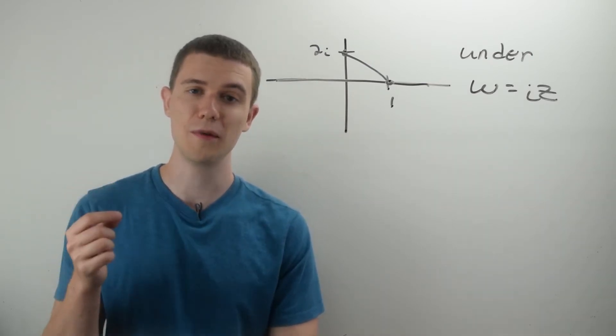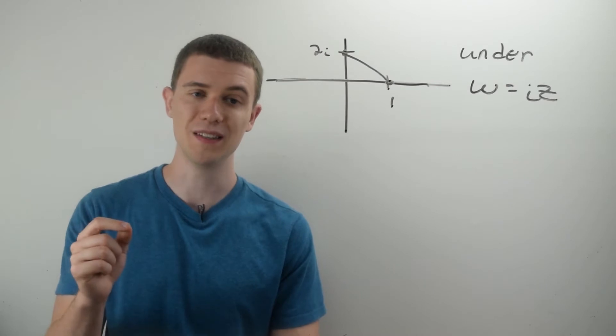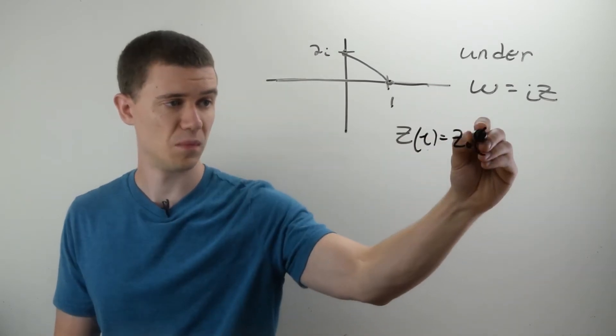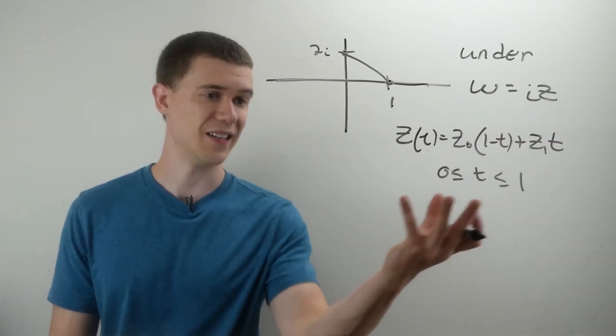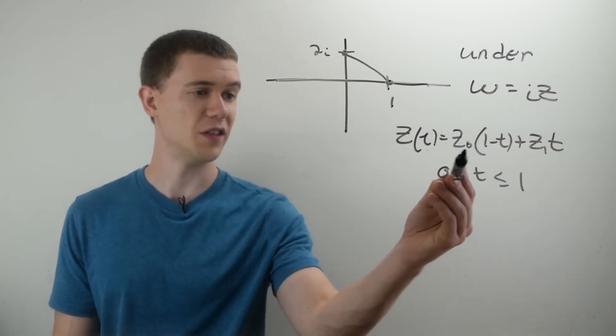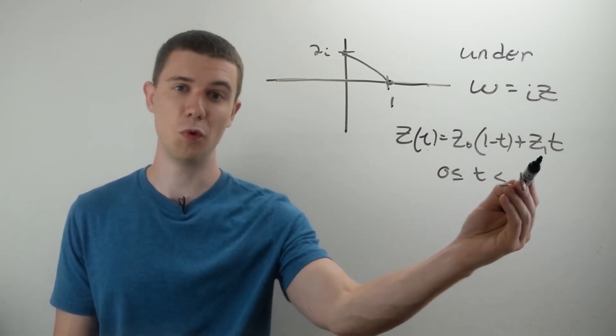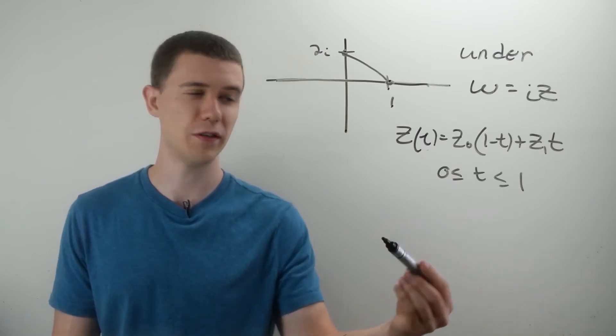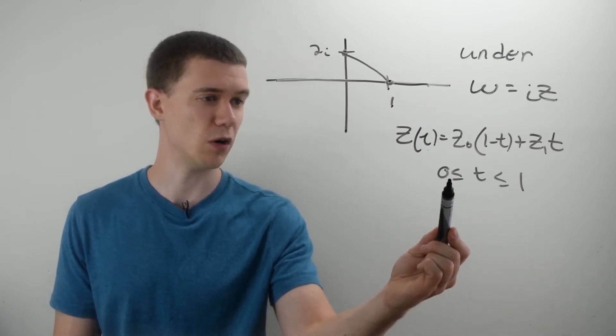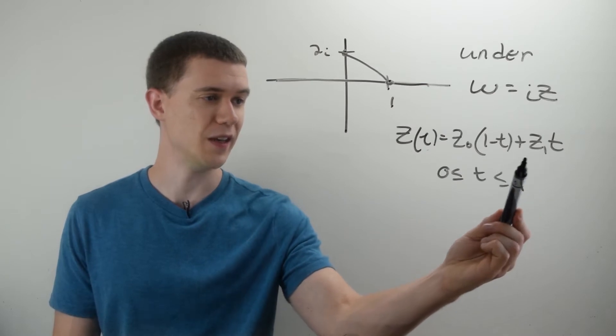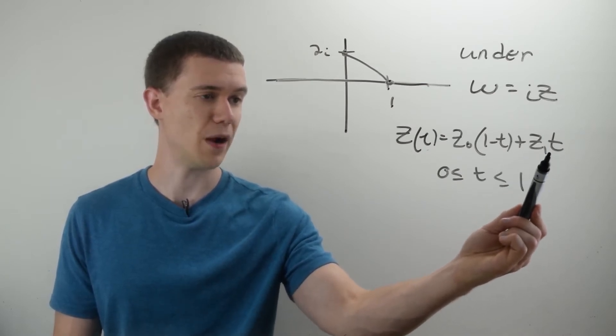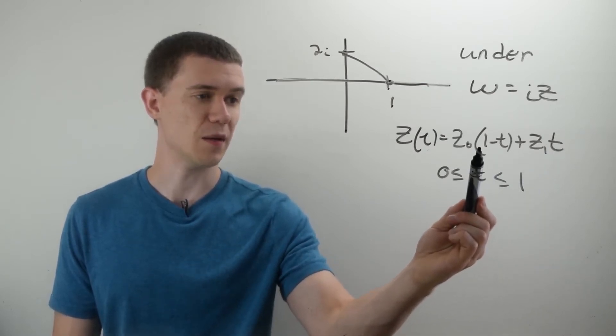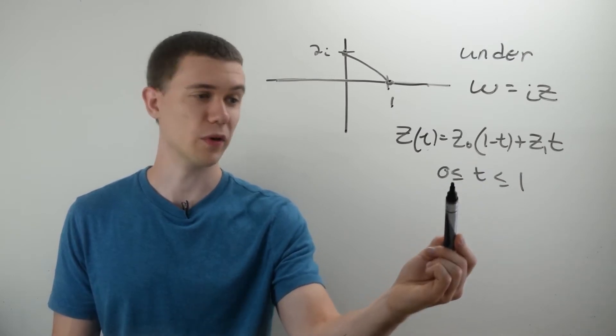In general, the parameterization of any line segment is given by this equation, where Z naught is the initial point and Z1 is the terminal point, and T varies from 0 to 1. You can see why this works, because if I plug in 0 into this equation for T, the Z1 term will drop out, and Z naught will just get times 1. So plugging in 0 gives us our first point.